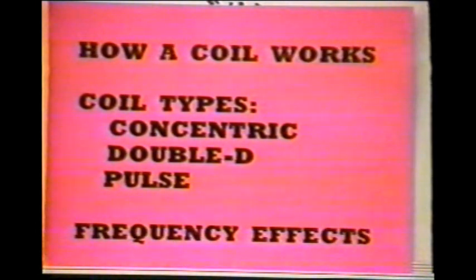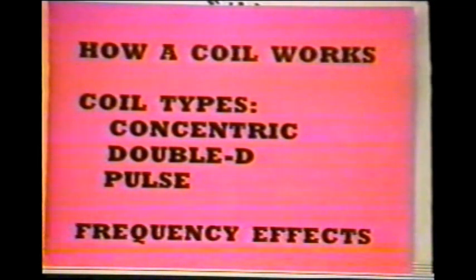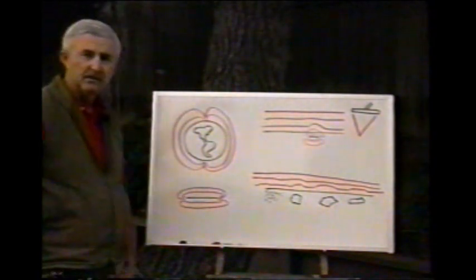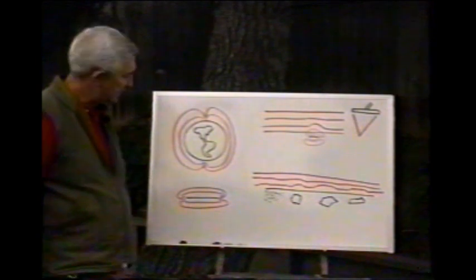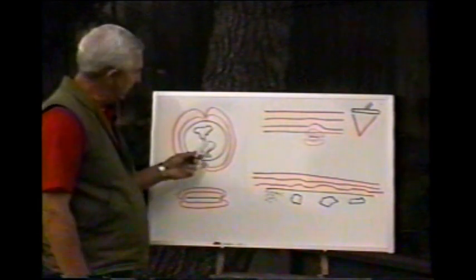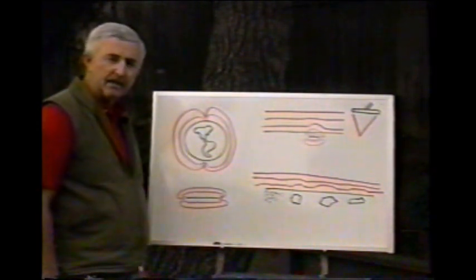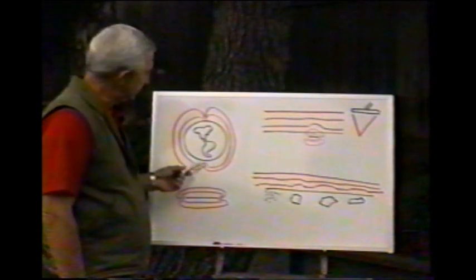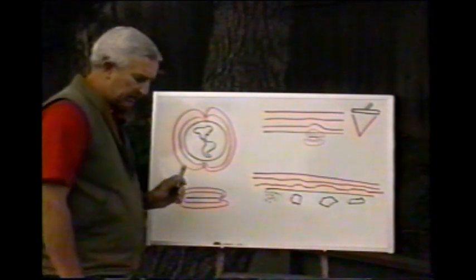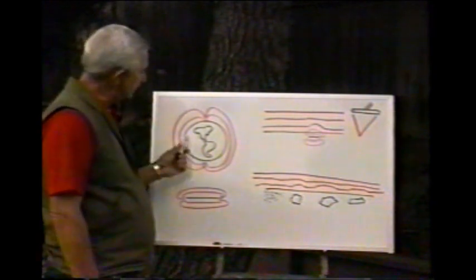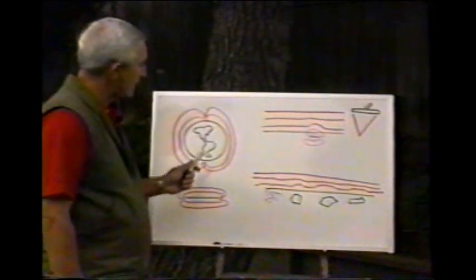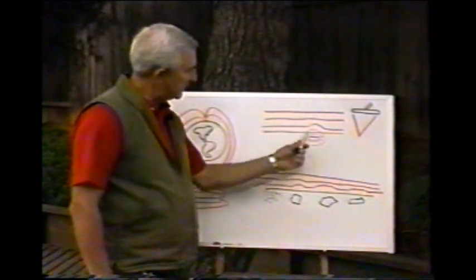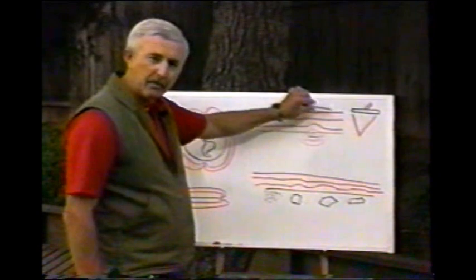How does a coil work? The subjects: coil types — concentric winding, double D winding, and pulse — plus frequency effects. If this depicts the earth, the red lines depict the north-to-south lines of electromagnetic force around the earth. Any mineral or metal object also has these kinds of lines of force in it.